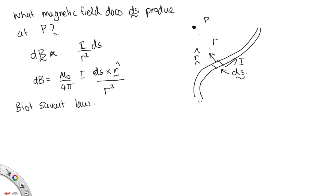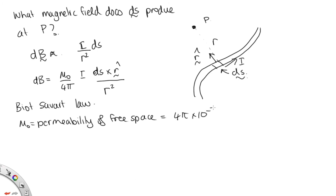In this equation, μ₀ is the permeability of free space, with a value of 4π × 10⁻⁷ T·m/A. The permeability of free space is related to the permittivity of free space ε₀ through: c = 1/√(μ₀ε₀), where c is the speed of light. You'll be measuring μ₀ and magnetic fields in the slinky coil laboratory exercise. The Biot-Savart law is quite tedious to use, but it will give you the magnetic field for any situation.